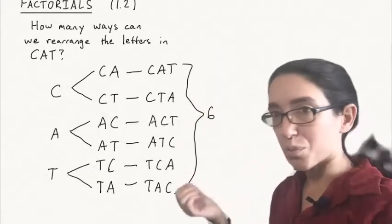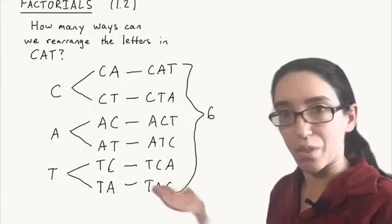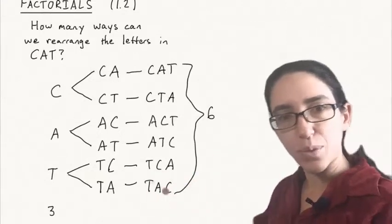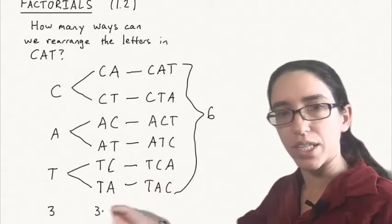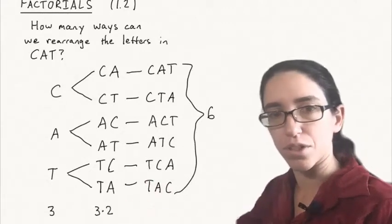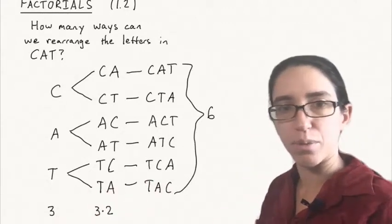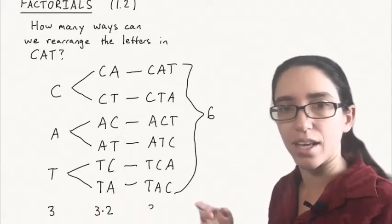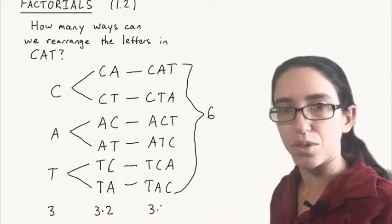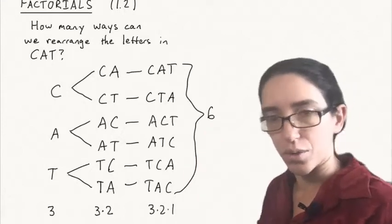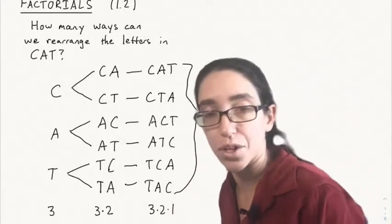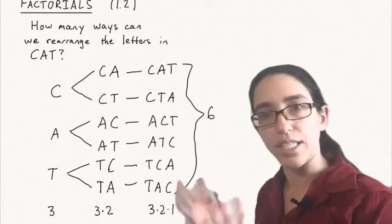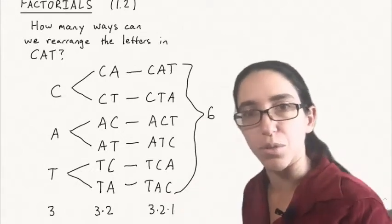But of course in combinatorics, we don't want to just count things directly. We want fast ways of computing these things. The fast way in this case is to say there are three possibilities for the first letter, then three times two possibilities for the first two letters, and finally three times two times one to put all the letters in some order. Three times two times one is six — that's an example of a factorial. It's the product of all the numbers from one to three.